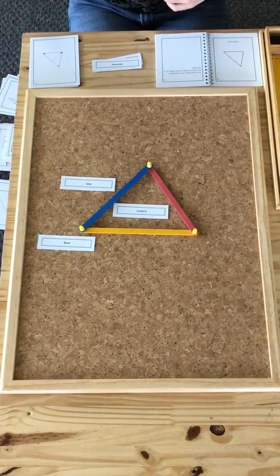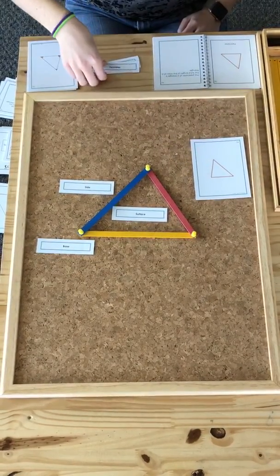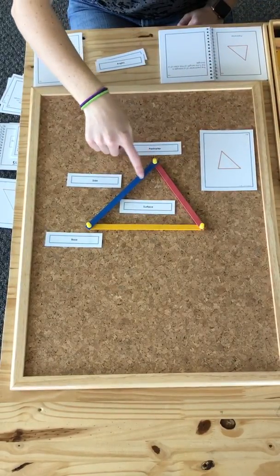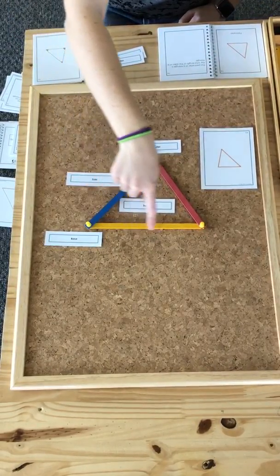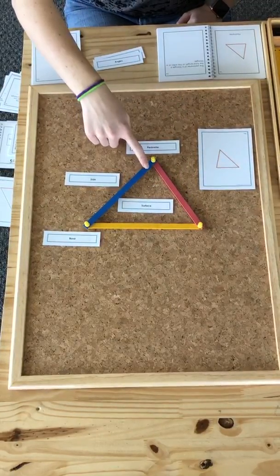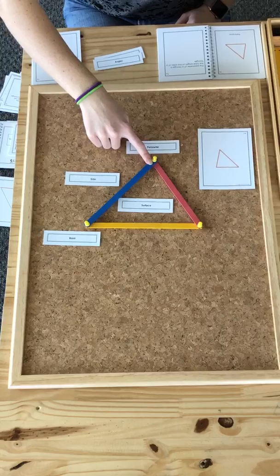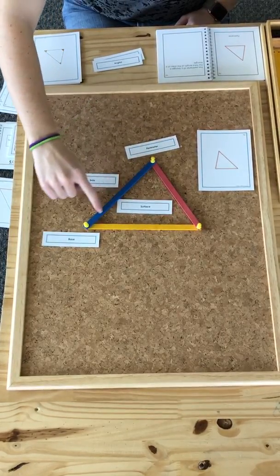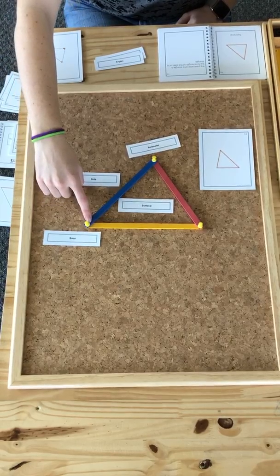The next part is the perimeter. And the perimeter is the total length of the sides of the triangle. So if this side, let's just say this side is three units, whatever units of measurement.